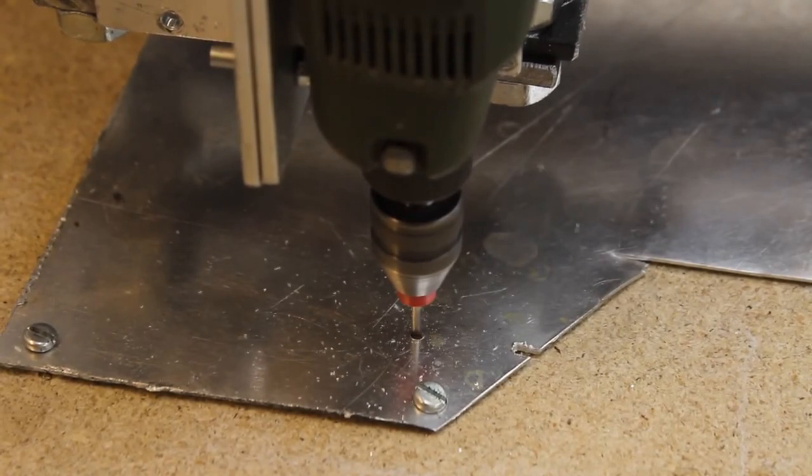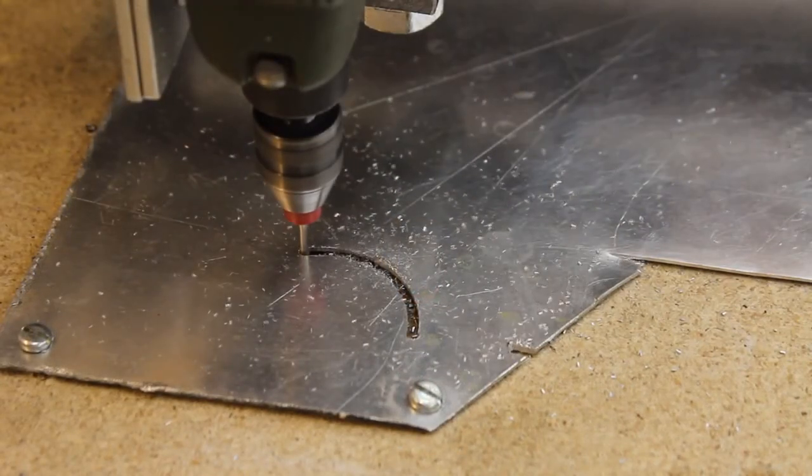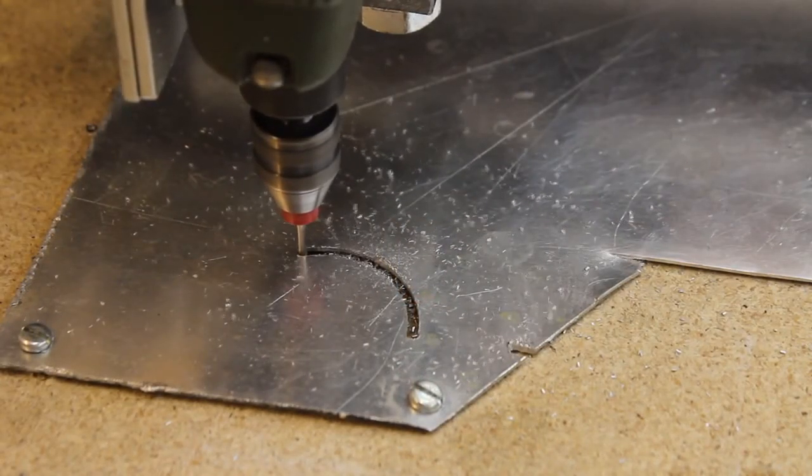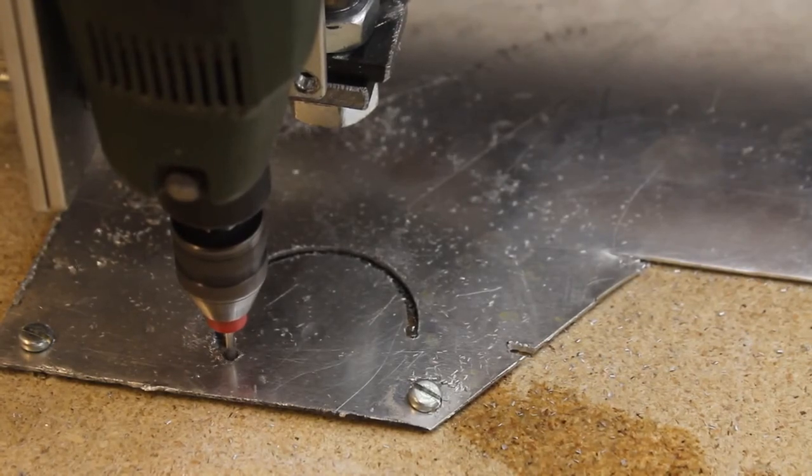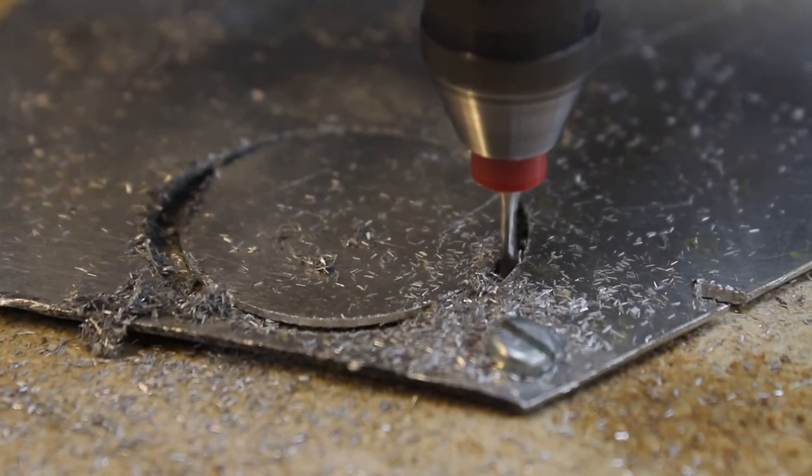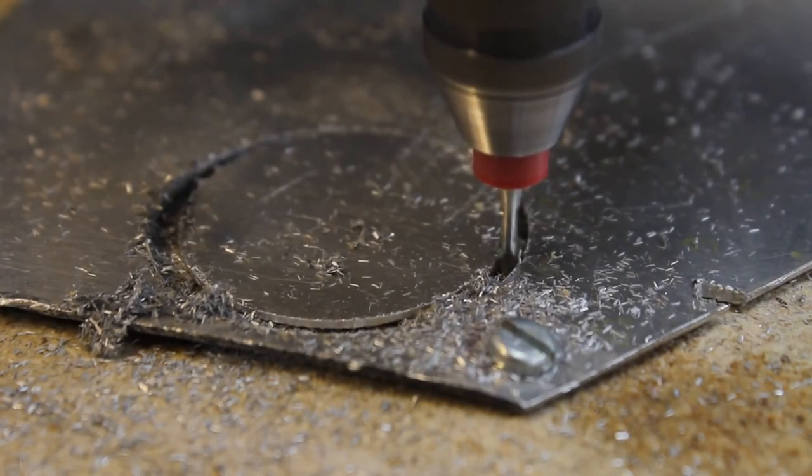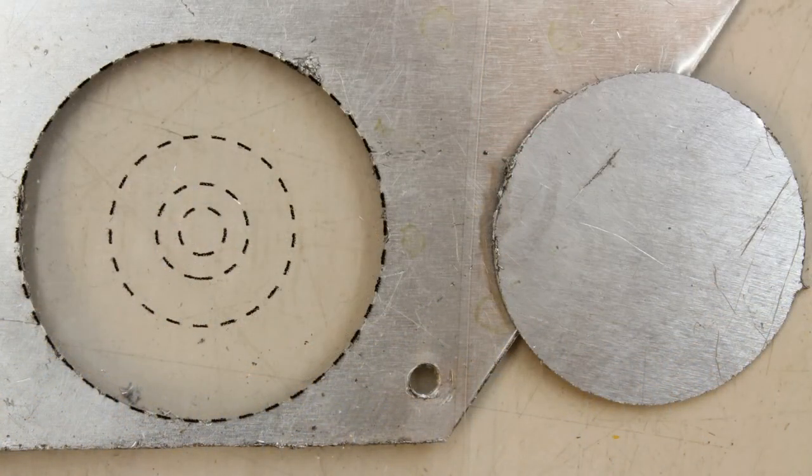Besides acrylic plastic, the machine can also cut 0.8mm aluminum plates. I have not tested any other materials yet. As mentioned before, you can get more information on the project page. Thanks for watching and I'll be back!